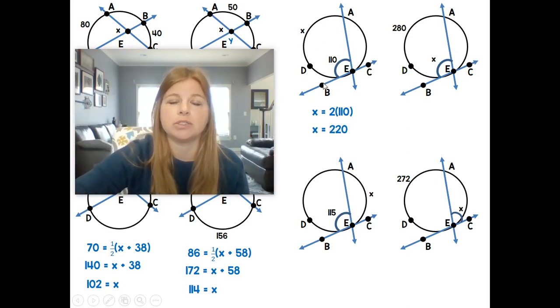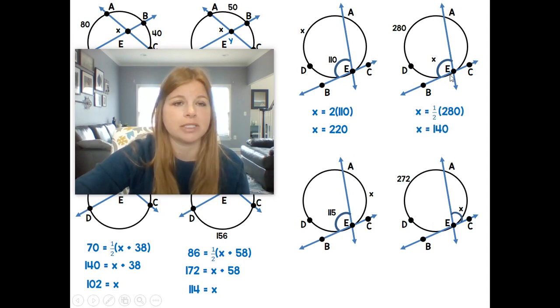So in this case, the arc is 220 degrees. Here, if I give you the arc as 280 and I ask you for the angle, then that would be the opposite. To go from arc to angle, we cut it in half, and it would be 140.